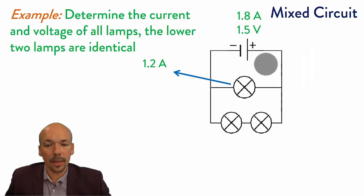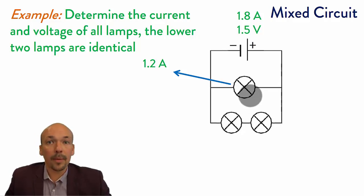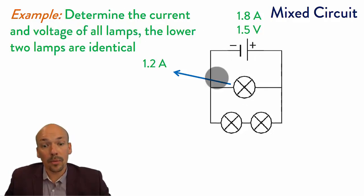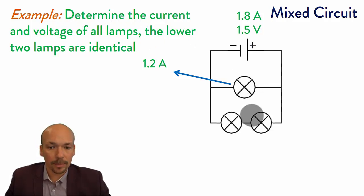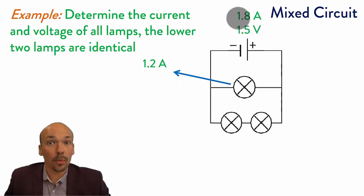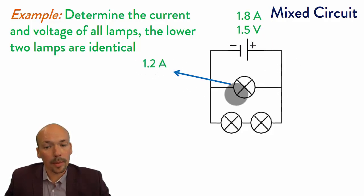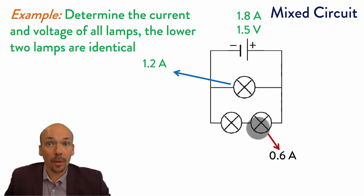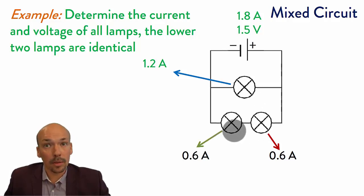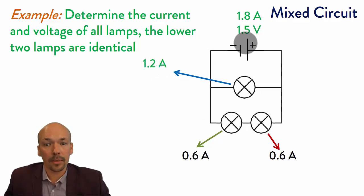Now we have a mixed circuit. These two lamps are in series, and they together are parallel with this one. Using the two rules about series and parallel circuits, you should be able to determine the current and voltage of all these lamps. The two lower lamps are identical. We know 1.8 amperes come out of the power source: 1.2 amperes go through the top lamp, and 0.6 go through each of the two series lamps. They come together and return to the battery.